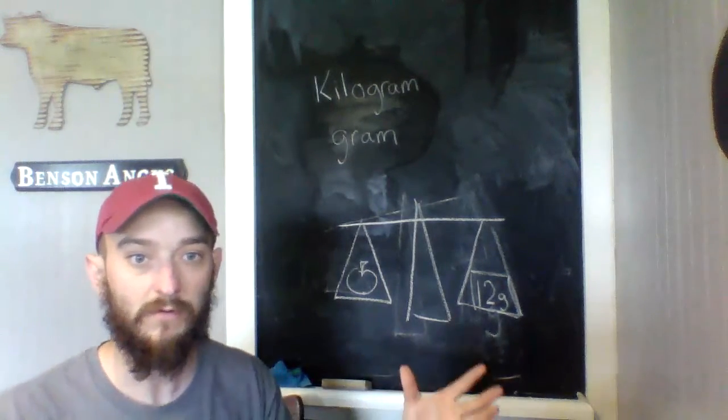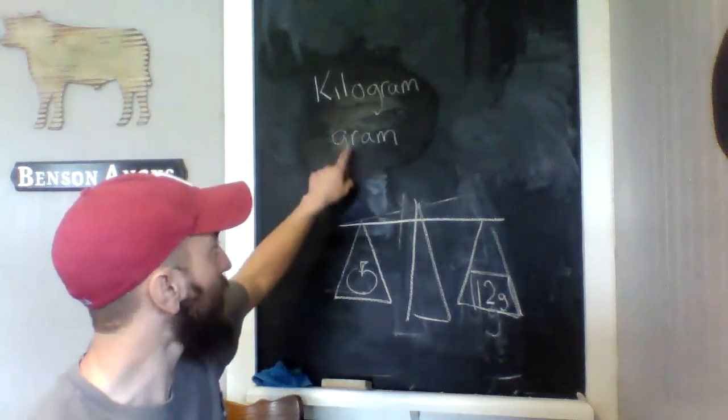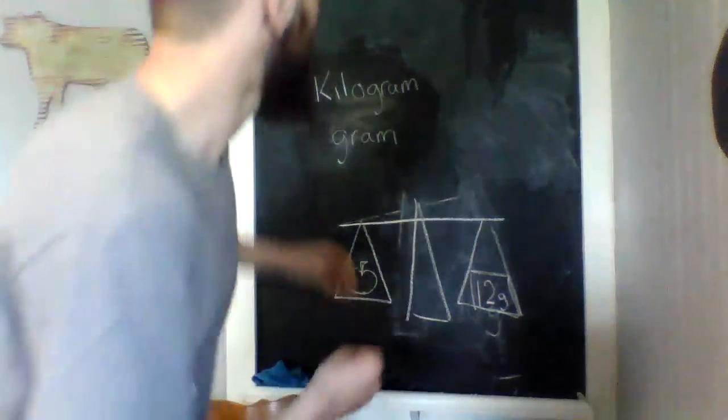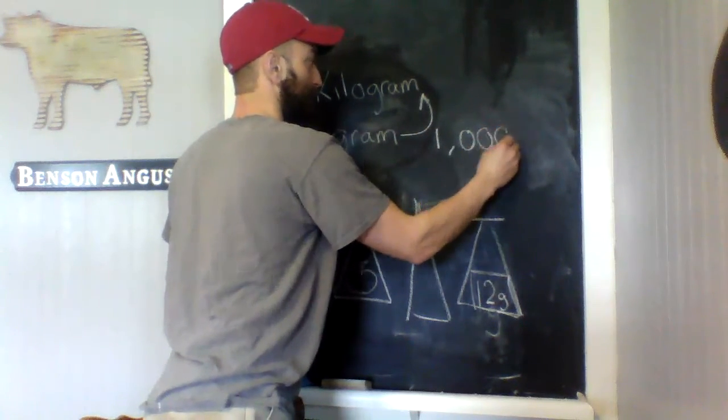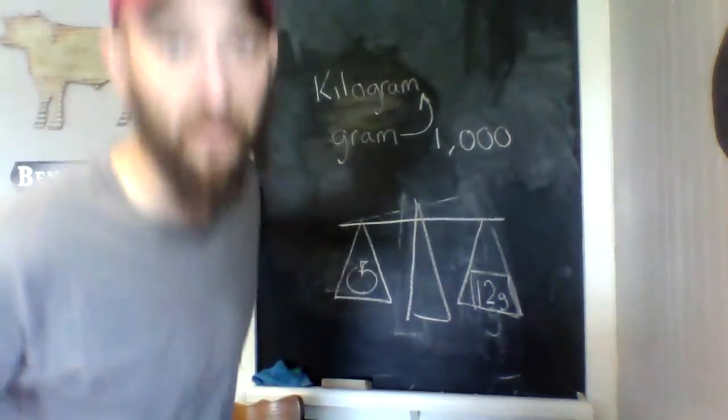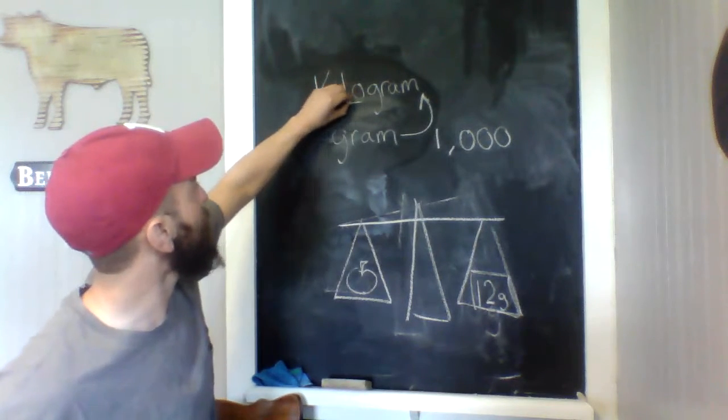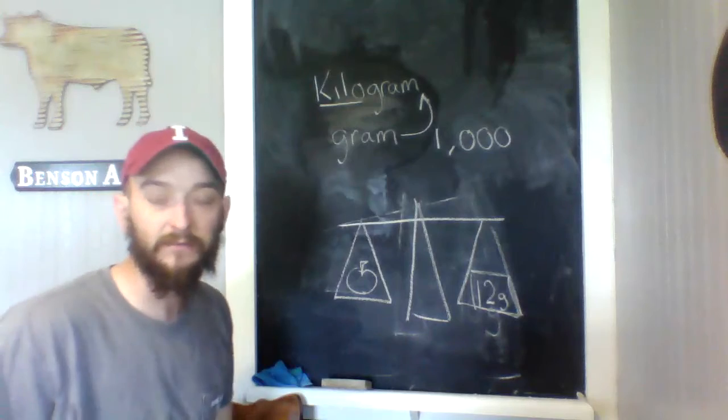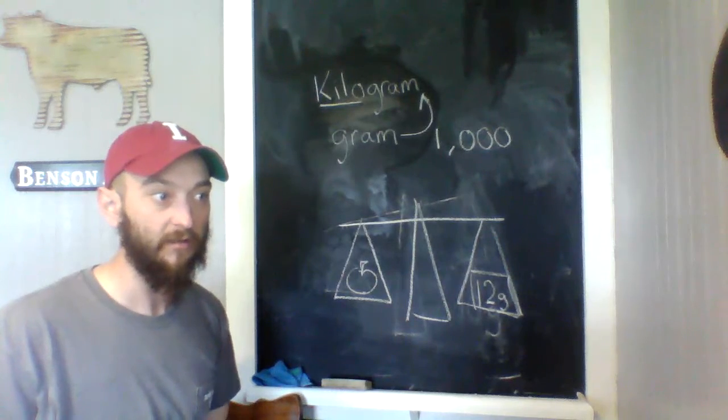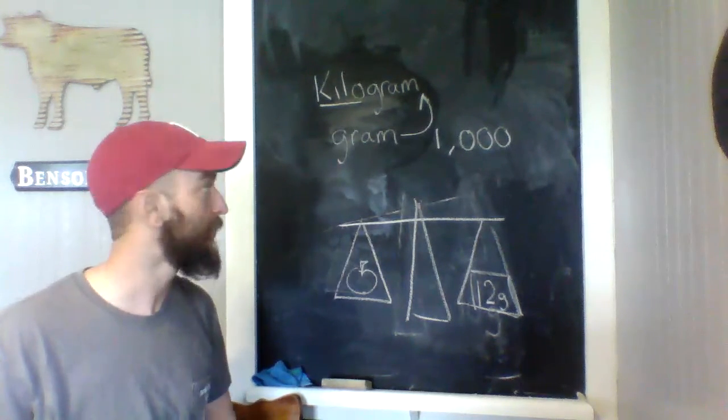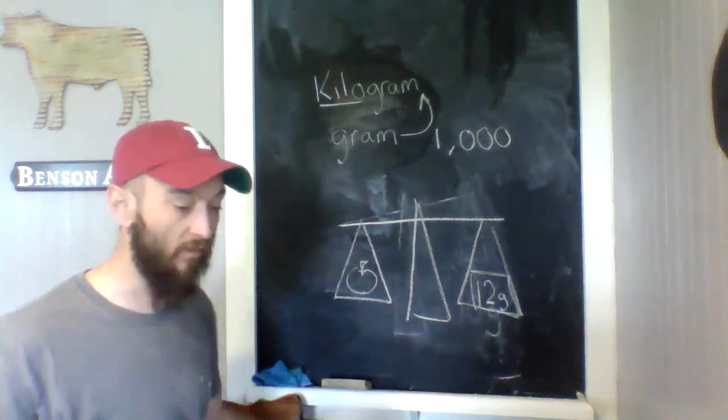So grams, there are 1,000 grams in a kilogram. We've talked about kilo before. That kilo prefix means a thousand. If you remember back when we talked about prefixes, kilo means a thousand. So there's a thousand grams in one kilogram. You can kind of think of how much that would be—a thousand of those, it's going to be pretty heavy. So this is what we're going to work on measuring with.